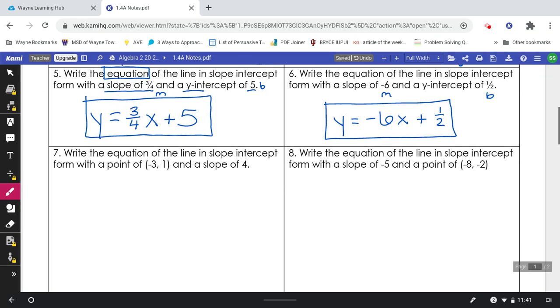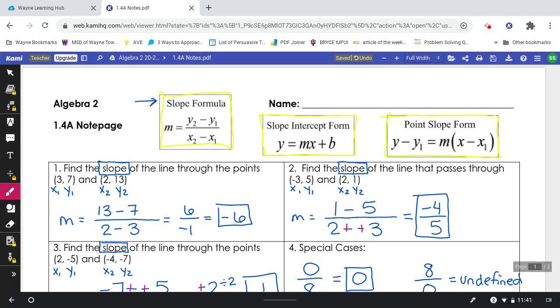You should have written y equals negative 6x plus 1 half. For the next problems 7 and 8, we are actually going to be using one of the formulas from up above, this one over here called point slope. So we are going to be using this formula for problems 7, 8, 9, and 10.